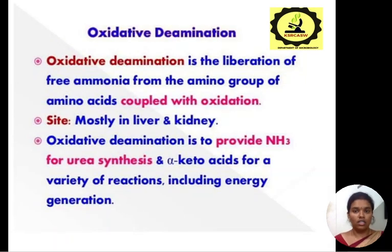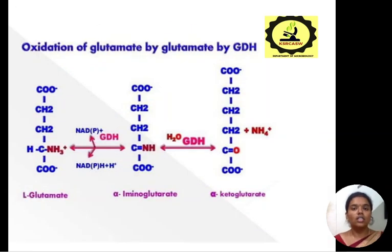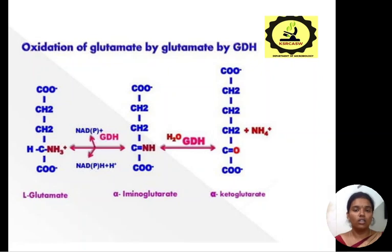Next is oxidative deamination. Oxidative deamination is the liberation of free ammonia from the amino group of amino acids coupled with oxidation. The site of oxidative deamination is mostly in the liver and kidney. This oxidative deamination provides NH3 for urea synthesis and alpha-keto acids for a variety of reactions including energy generation. In this reaction, L-glutamate on reaction with GDH gives alpha-iminoglutarate, which further gives alpha-ketoglutarate.